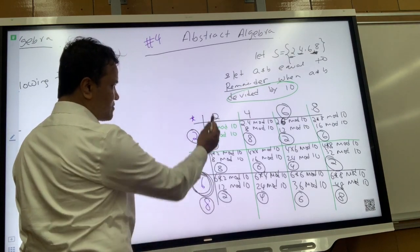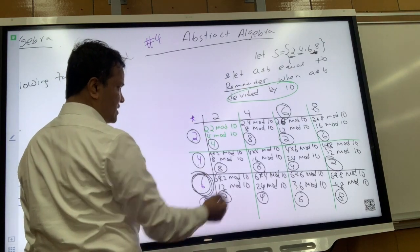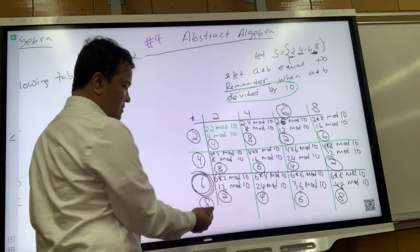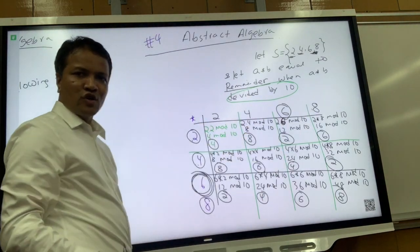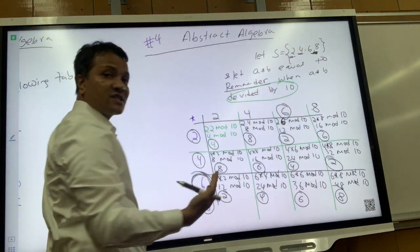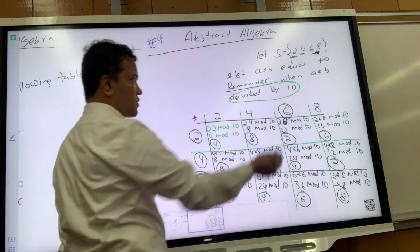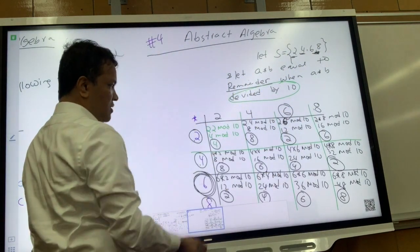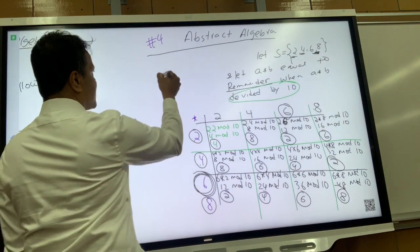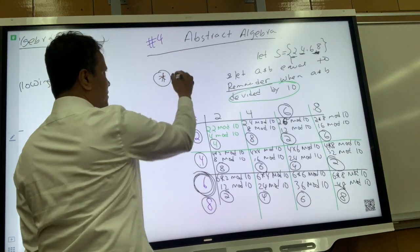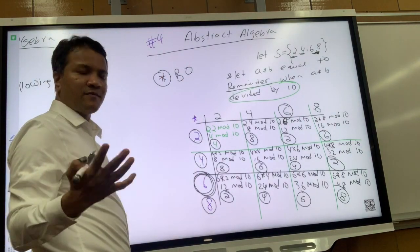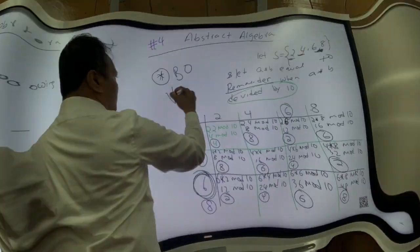Now I want you to do the row for 8 by yourself. If you do it yourself, you'll see that you get all elements that belong to the set. From this you can conclude that star is a binary operation.